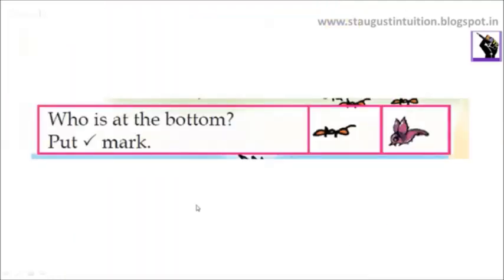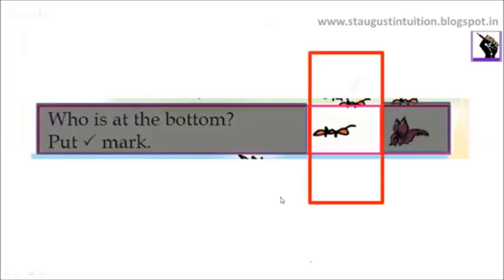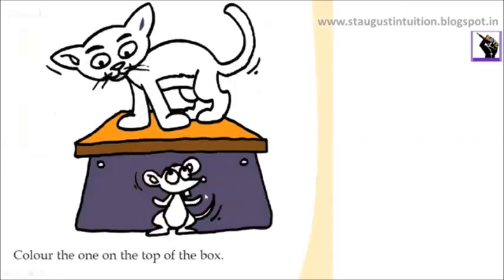So who is at the bottom? Put a tick mark. Here are ants at the bottom — do you see the ants at the bottom? Yes. That's the ants at the bottom — a tick mark. Now leave it to the other in your textbook. Color the one on the top of the box. I will color in the top of the box. I will color in the bottom.